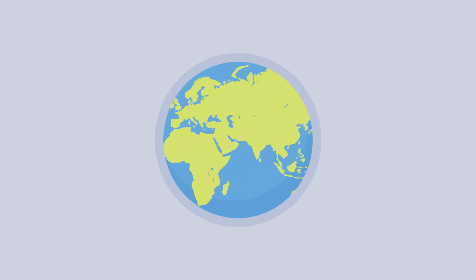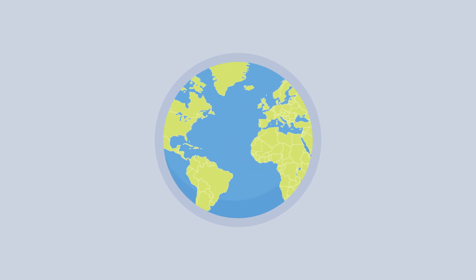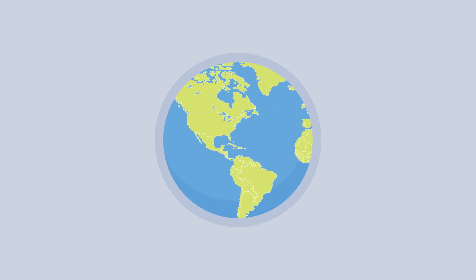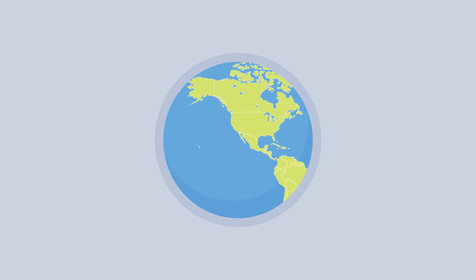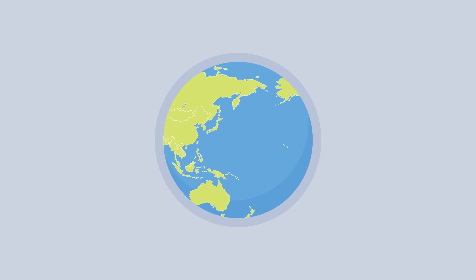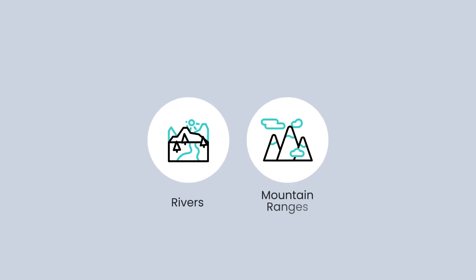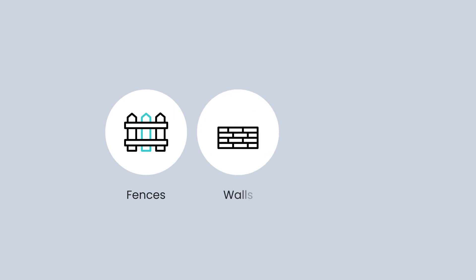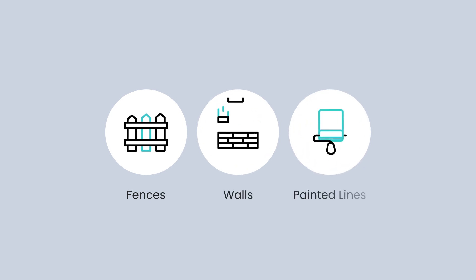One last example is geographical boundaries — physical demarcations that separate regions, countries, states, or properties. Geographical boundaries, like rivers or mountain ranges, can be natural or artificial, such as fences, walls, or painted lines.